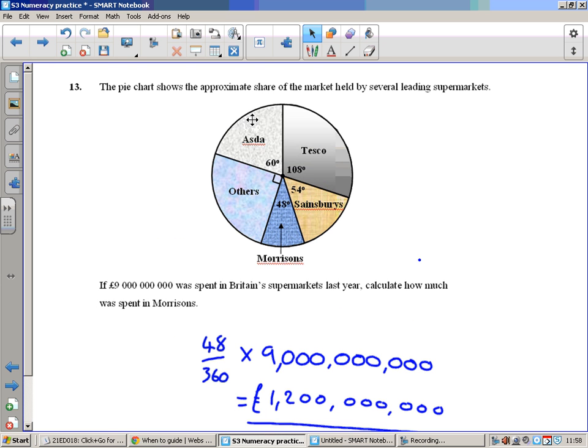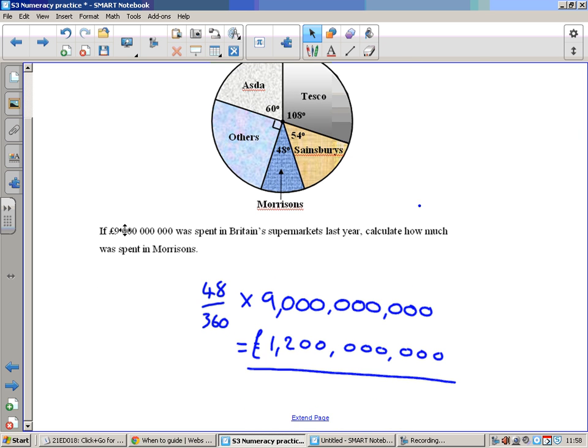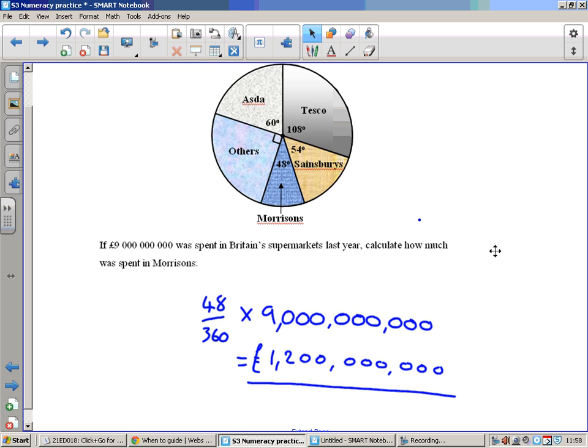This pie chart shows the approximate share of the market held by several leading supermarkets. Nine billion pounds was spent in Britain's supermarkets last year. Calculate how much was spent in Morrison's. We're just doing a fraction question here. There are 360 degrees in a circle, so the amount spent in Morrison's was 48 over 360, and we know the total amount was 9 billion. So we do 48 divided by 360 multiplied by 9 billion, and that comes out as 1 billion 200 million pounds.